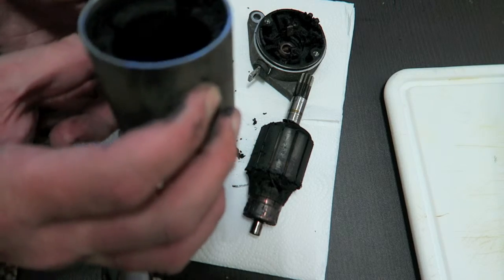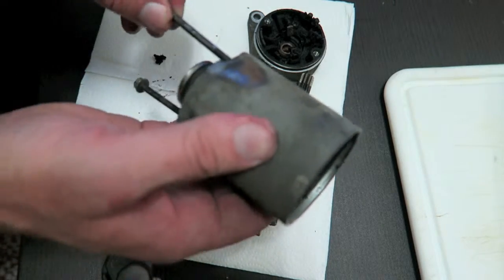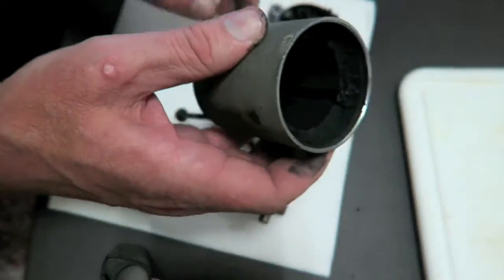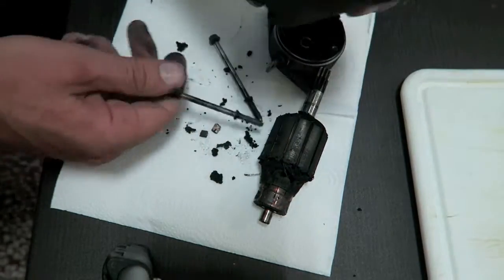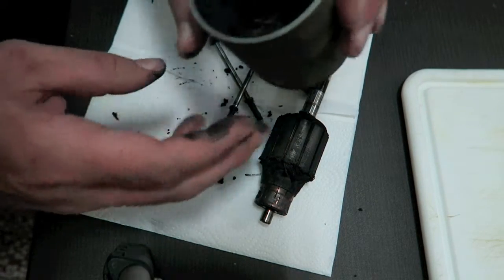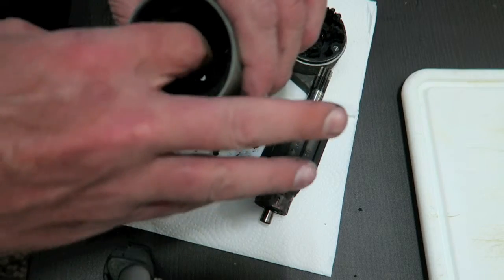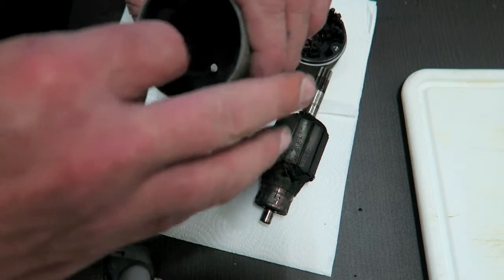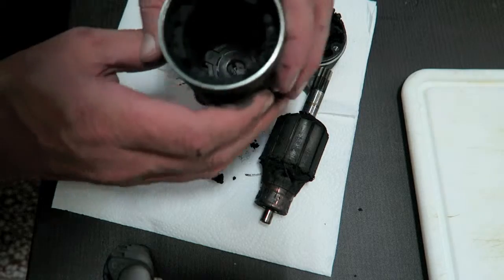There's the magnets inside. Little rubber seals, and there's a washer that was stuck to the magnets in there.